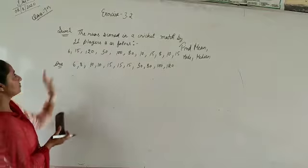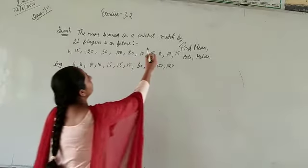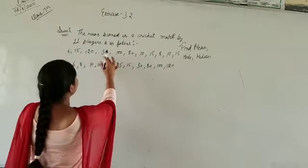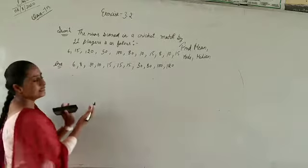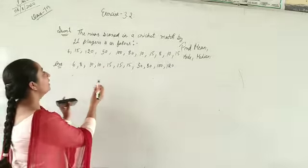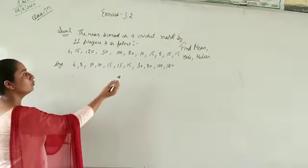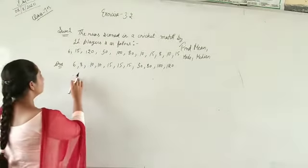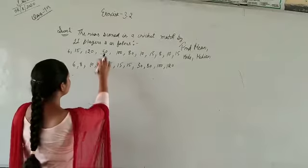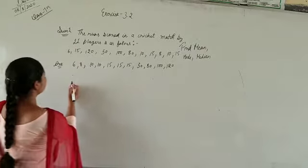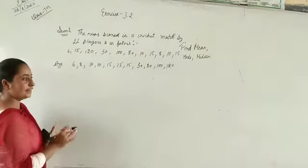So this is the first step. The run scores in a cricket match for 11 players is as follows. We need to find the mean. The first step is we will arrange the scores in ascending order.